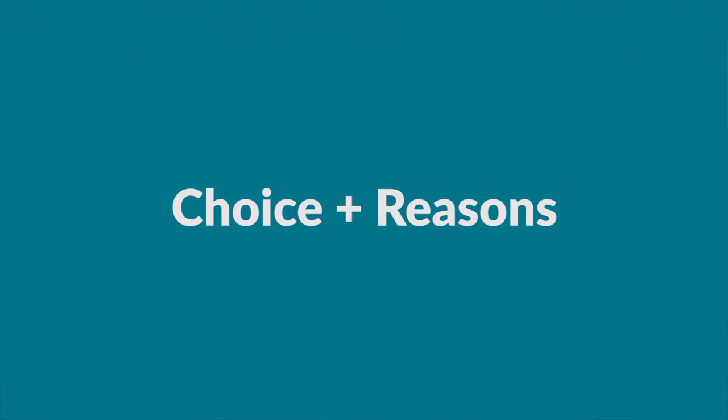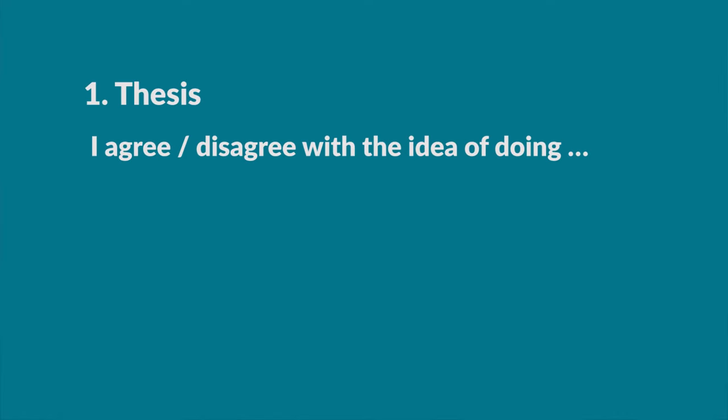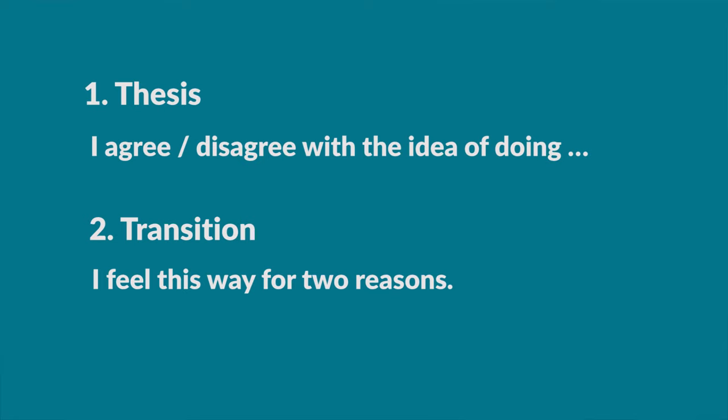Let's start with the template for the personal choice question. In the personal choice question you need to decide on a choice and support your decision with reasons. First you state your thesis — this is your opinion. For example, you can say 'I agree or disagree with the idea of doing something.' After that you make a transition from your thesis to your two reasons by saying 'I feel this way for two reasons,' which signals you're about to give those two reasons.